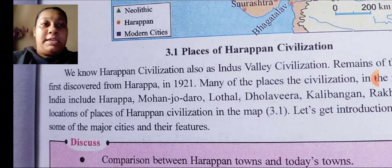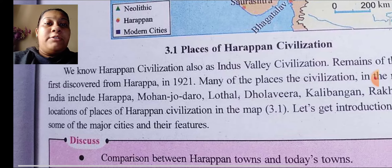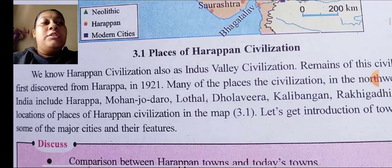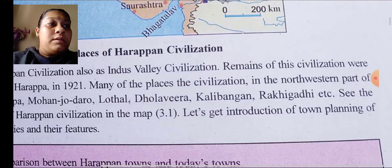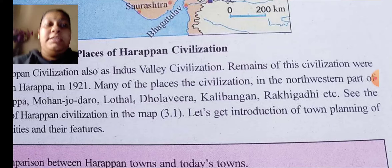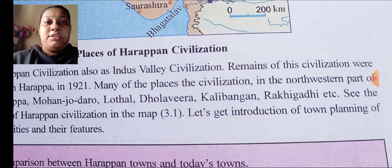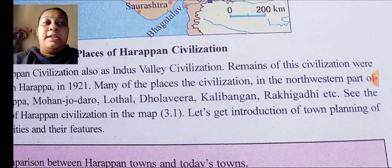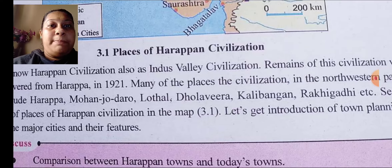Many places of civilization in the north and west part of India include Harappa, Mohenjo-daro, Lothal, Dholavira, Kalibangan, Rakhigarhi, and Akhigarhi, etc. See the location of these places of Harappan civilization in map 3.1.